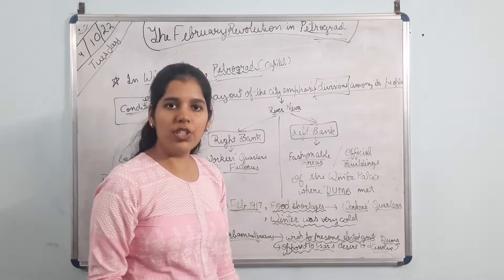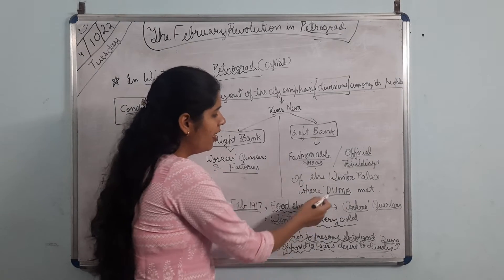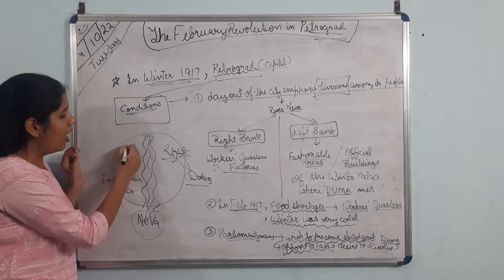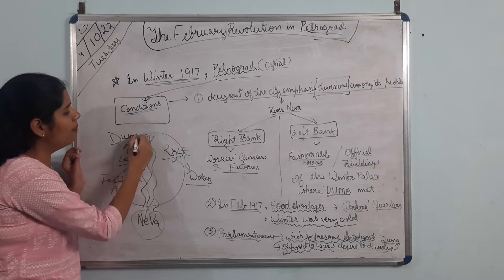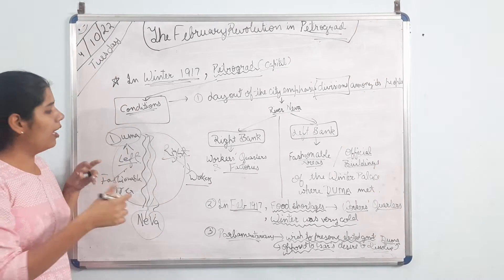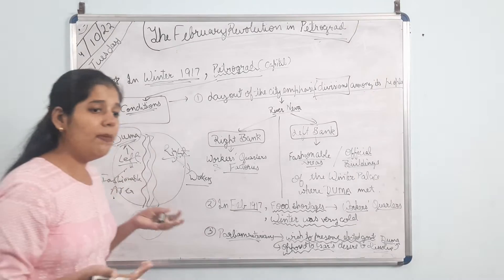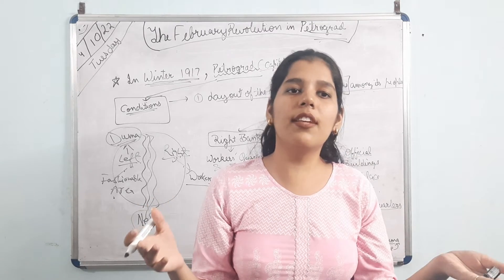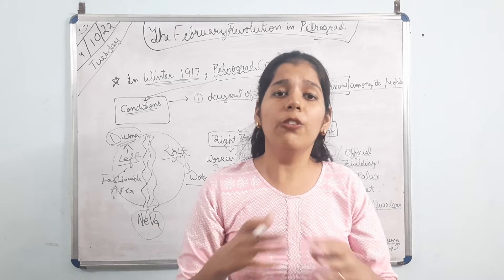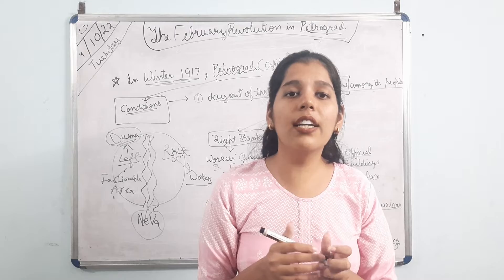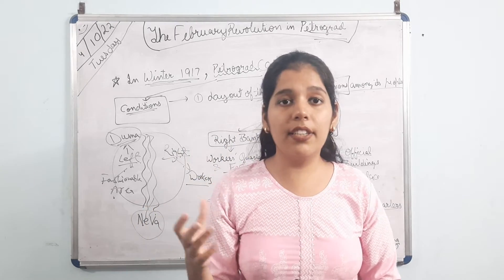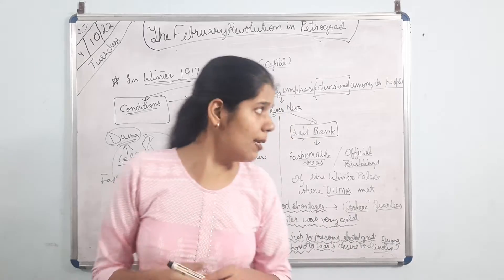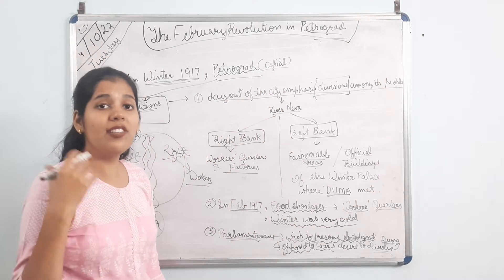On the left bank were the fashionable areas, or you can say official area - fashionable areas and official buildings of the Winter Palace, where the Duma met. Imagine a country divided into two - on this side of the river all workers will live, and on that side is the fashionable area where officials live. See how big a discrimination this is - the society at that time was completely divided, with River Neva in between.